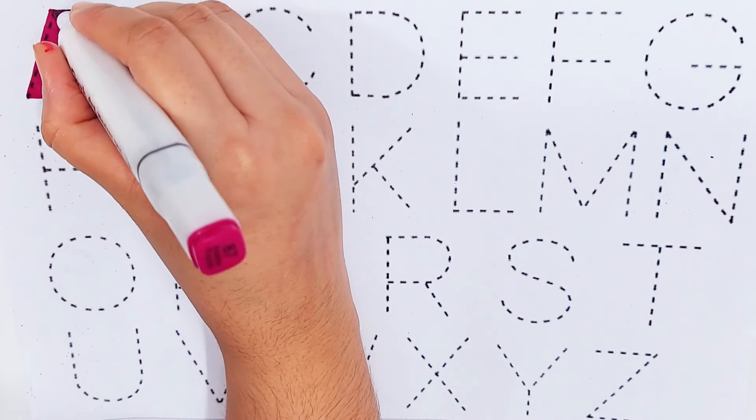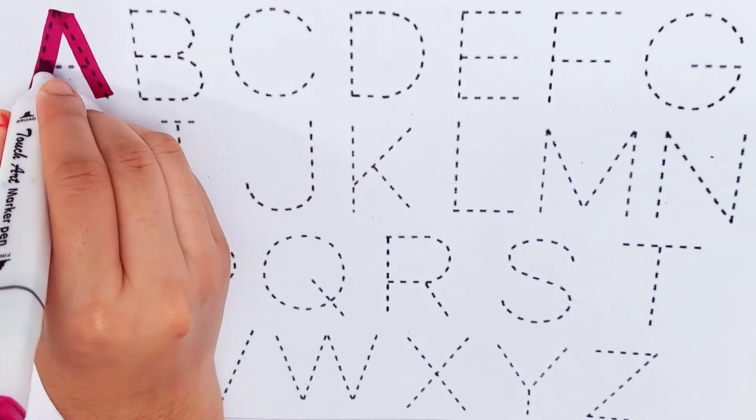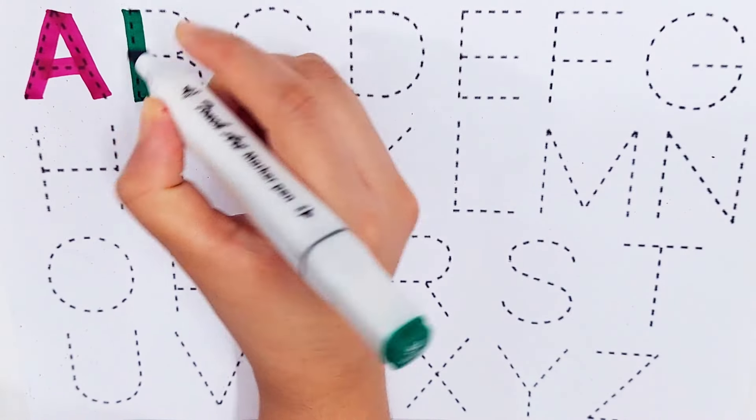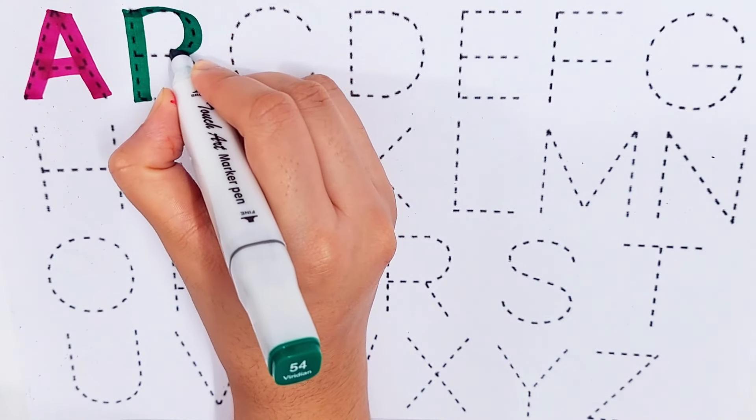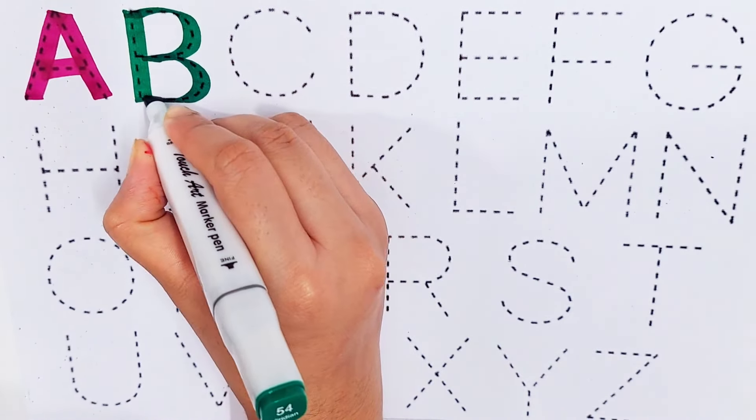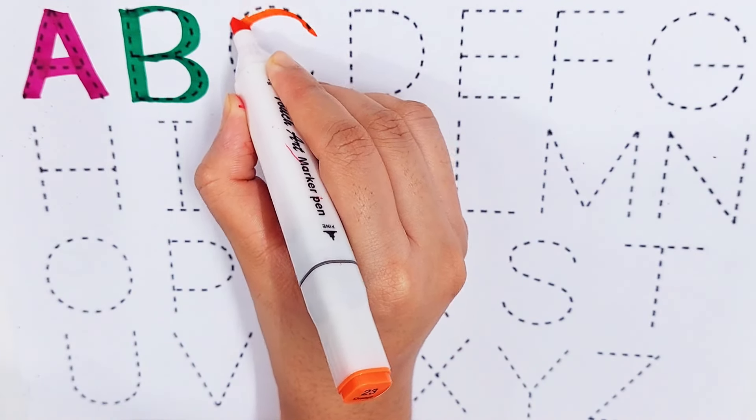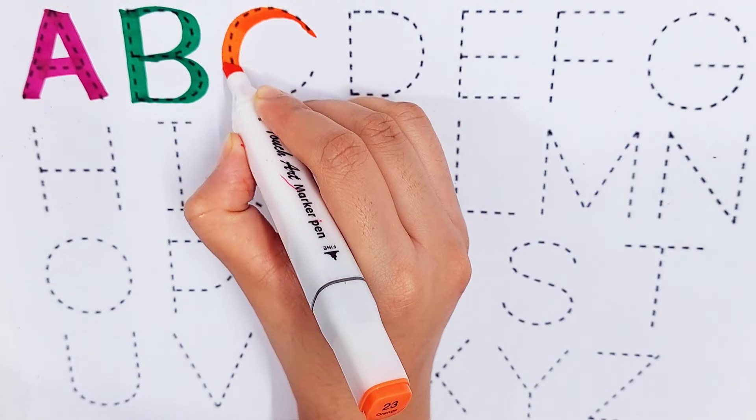A. A for Ant. B. B for Bus. C. C for Chocolate.